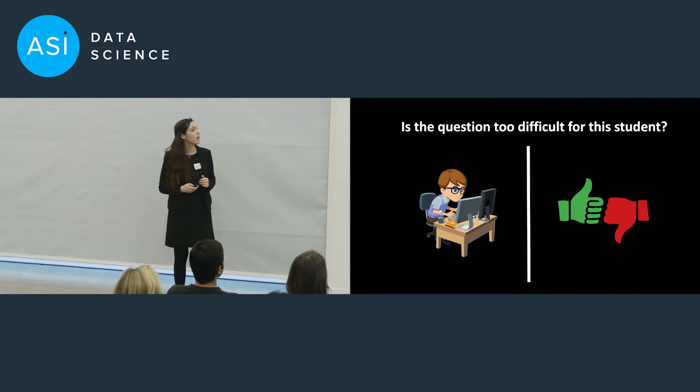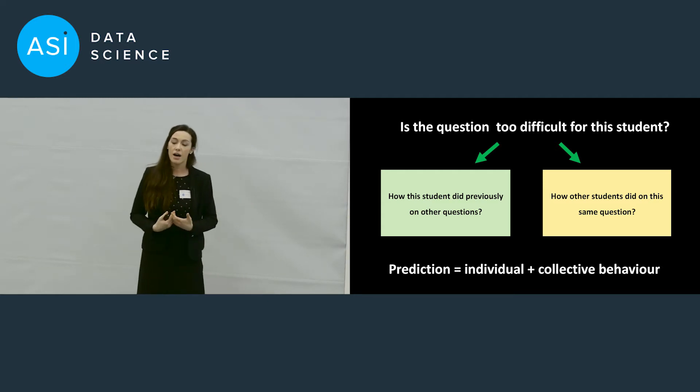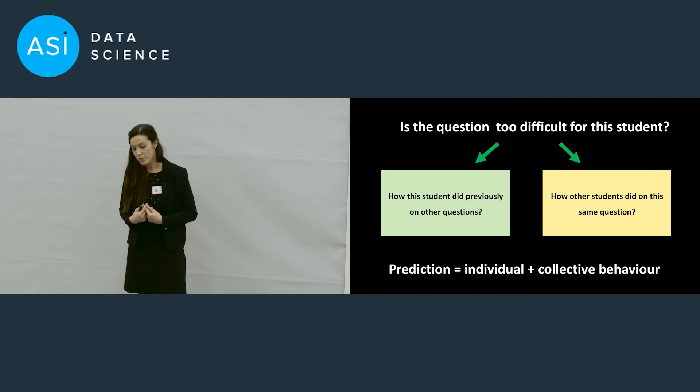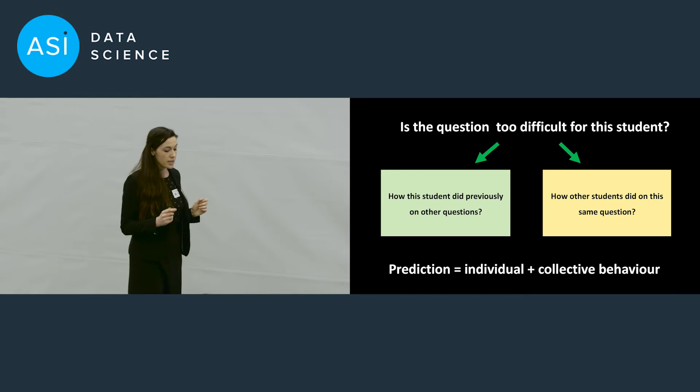And after this first step, I was able to pass to the second one, that was predicting if a question will be difficult or not in the future. A lot of different strategies are possible. And in the end, the best strategy I ended up with is to combine the history of the personal student and the collective behavior.